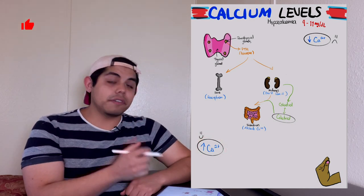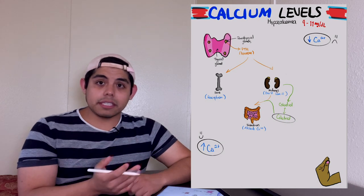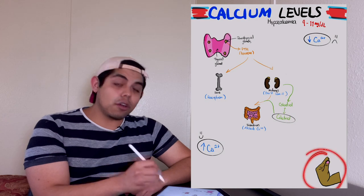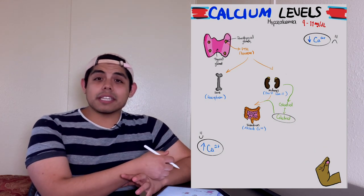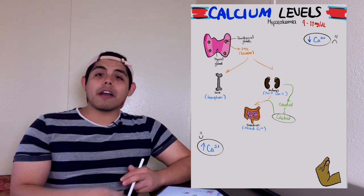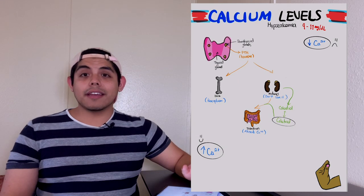This brings calcium back to the normal level of 9 to 11 milligrams per deciliter. Now you could probably notice this hand over here that represents the main symptom that patients with hypocalcemia would have: they will have muscle spasms.